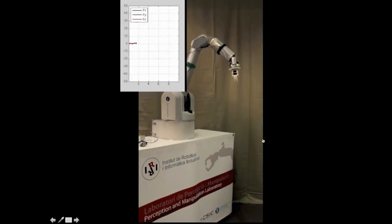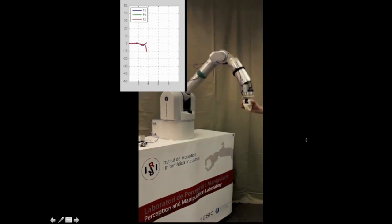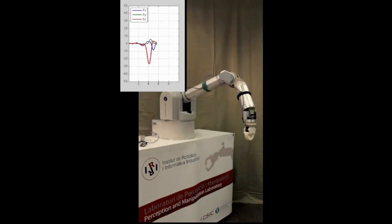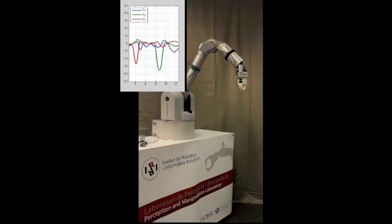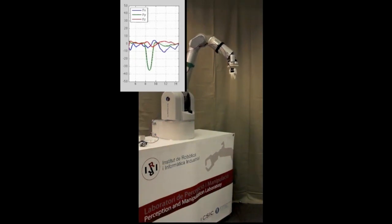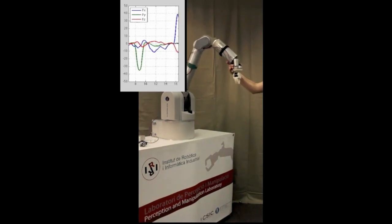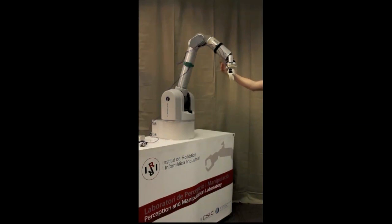The robot starts moving, and then we move it through the Z-direction, and then we push it through the Y-direction, and then we pull it on the X-direction. As you can see in the plot, the robot feels the forces that we apply on it.